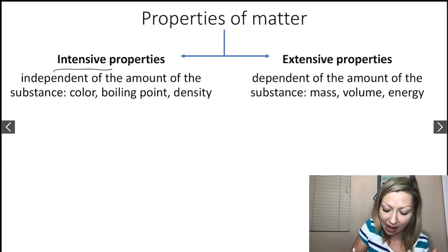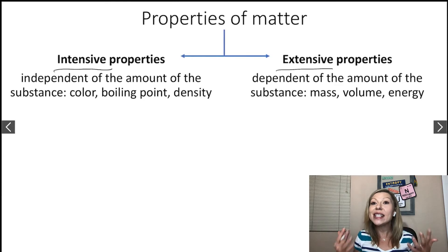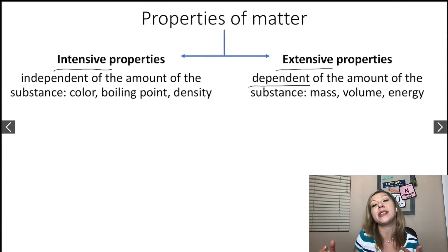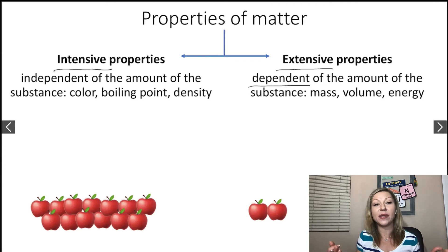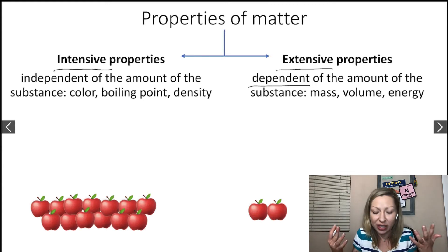Now, what are the different properties of matter? We can classify properties of matter as intensive and extensive. Intensive properties are independent of the amount of the substance. Extensive properties depend on the amount of the substance. Let's look at an example — some apples. What is an independent-of-amount property that you can observe on these apples?